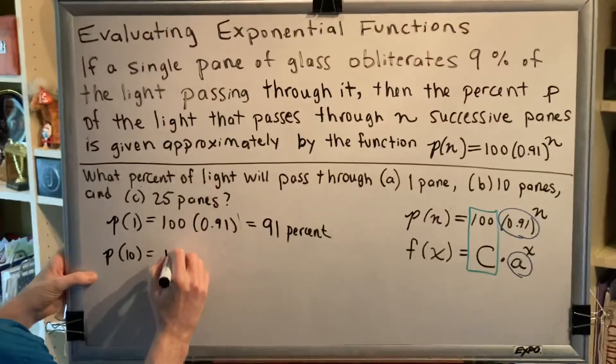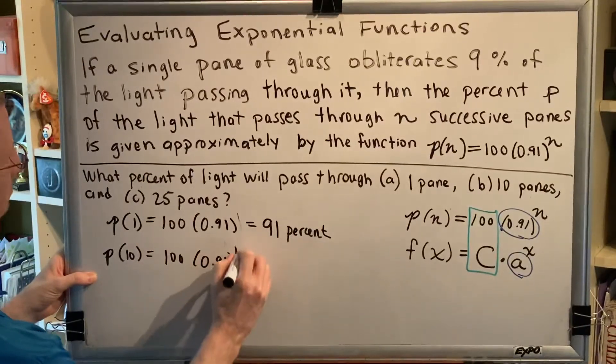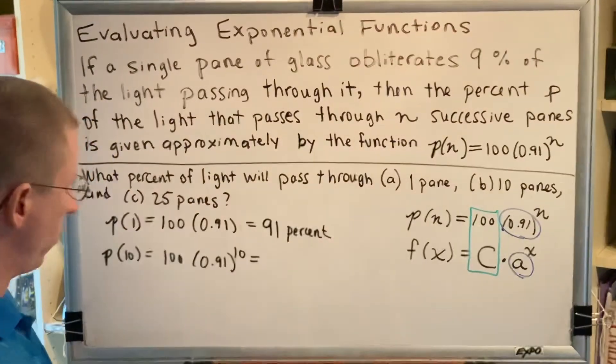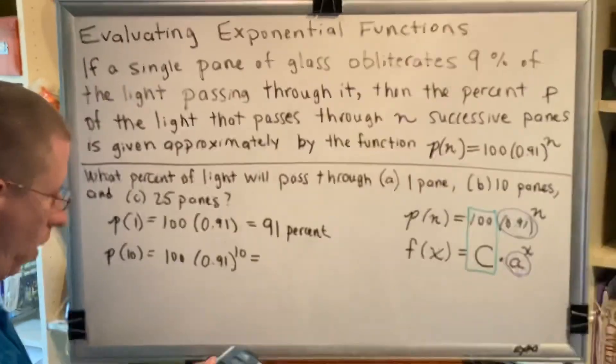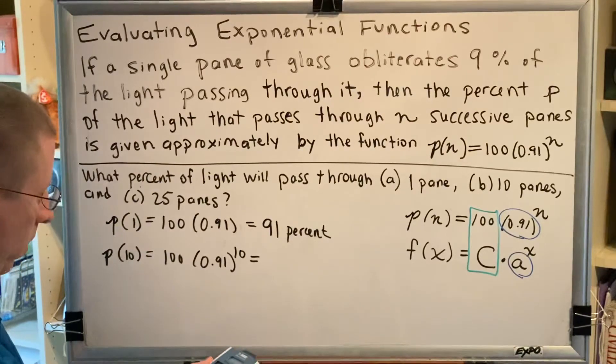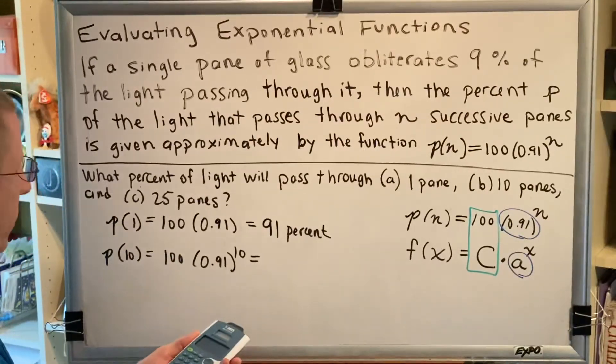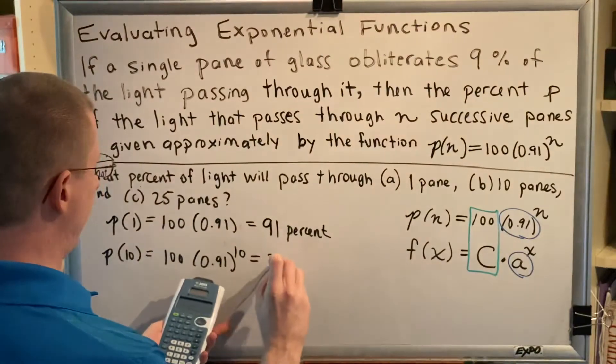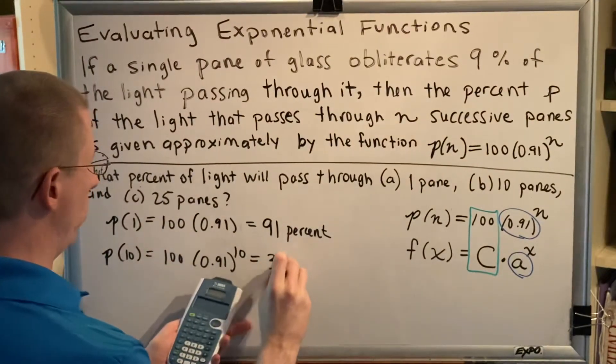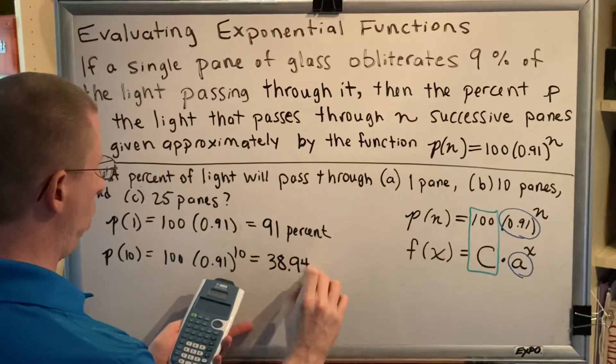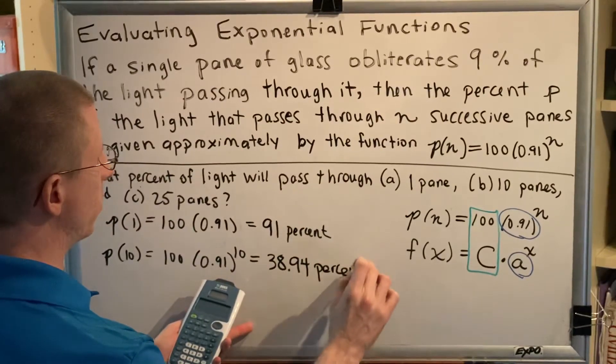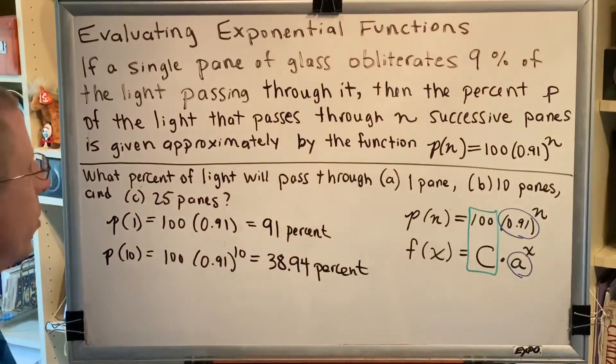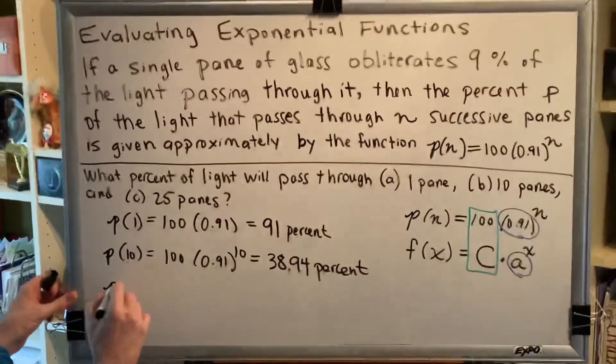Now we move on to p of 10. So we get 100 times 0.91 to the 10th power. And this is where we're going to need our calculators. So first we're going to follow order of operations and raise the number 0.91 to the 10th power. We get 0.389416, etc. Then we multiply by 100. And this tells us that the percent of light that gets through 10 panes of glass in a row would be 38.94%. There are no rounding instructions in this problem, so I'm just choosing to round to two decimal places. But when your math learning software prompts you with a problem like this, it will tell you how many decimal places that you should use in your answer.